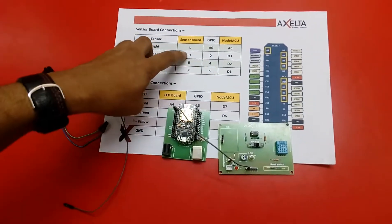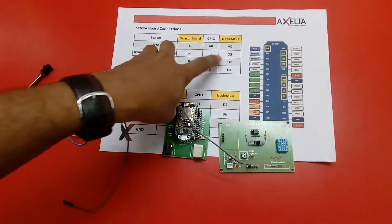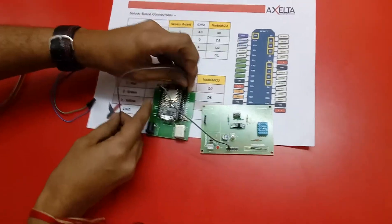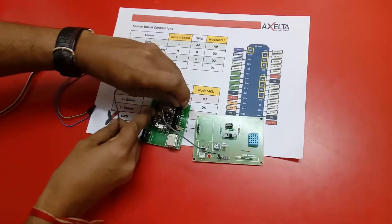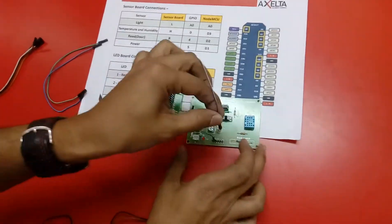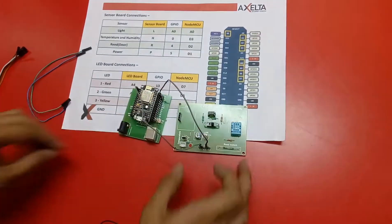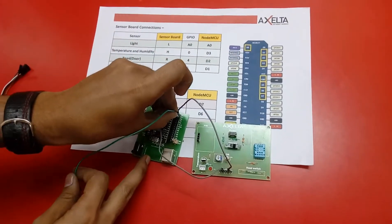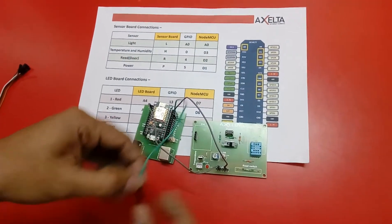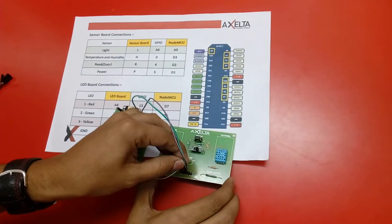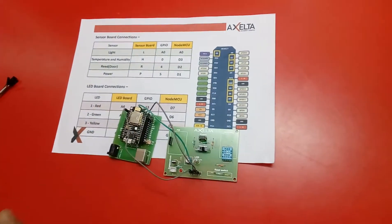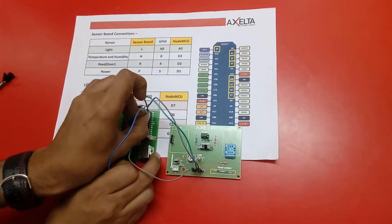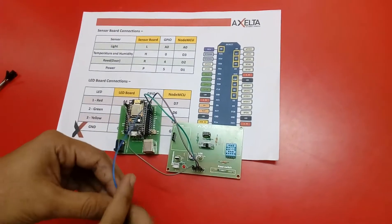As per table I am now connecting the rest 3 wires: H to D3, R to D2, P to D1.